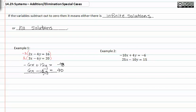When we add these together, notice that both terms add to zero, and we're left with zero is equal to negative eight. This is not a true statement. It doesn't work, so we have to say that there is no solution.